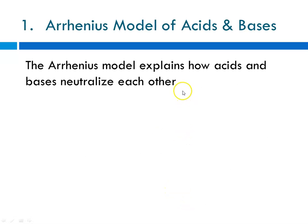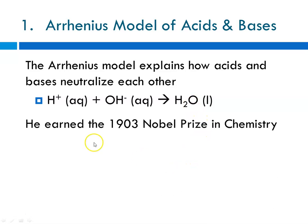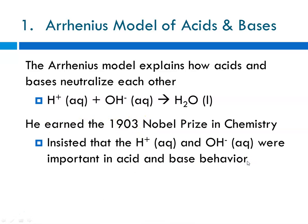This model explains how acids and bases can neutralize one another. You'll recall when we were doing double replacement reactions, we said the special reaction between an acid and a base, when you broke it down to the net ionic equation, the net ionic equation for the reaction of a strong acid with a strong base was H+ plus OH- produces water. Arrhenius figured this out, and in 1903, he won the Nobel Prize in Chemistry. He insisted that H+ aqueous and OH- aqueous were important indicators in acid and base behavior.